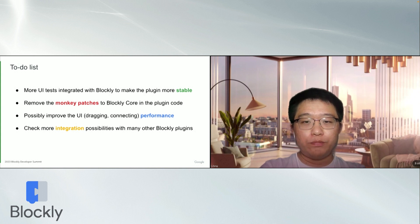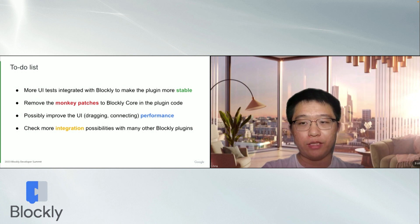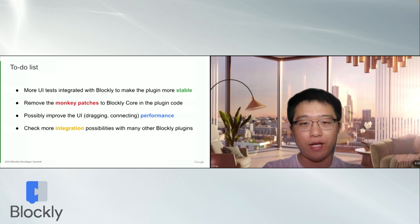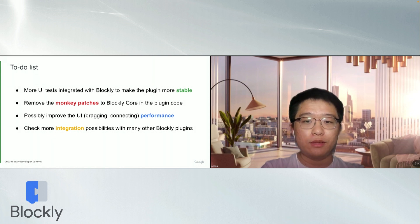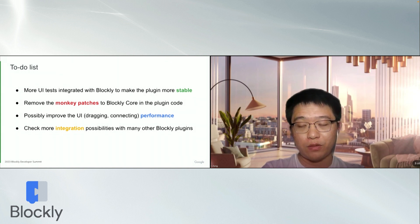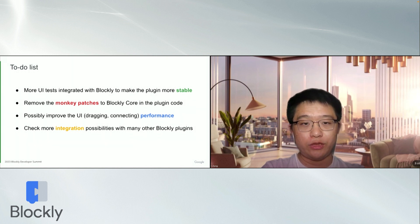Besides, there should be few issues, but more UI integration tests are still needed, as you may never expect where the bugs will be. Also, the plugin has some monkey patch code, so related code in Blockly core could be refactored to allow more flexibility and remove those monkey patches. In addition, there should be room for UI performance improvement. Last but not least, although many other Blockly plugins can work well with the multi-select plugin, we will still need to check more to see if code modification is needed to work with them.